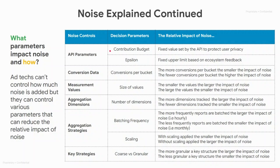The first two parameters are API privacy parameters. The contribution budget is a fixed value set by the API to protect user privacy. As you will see in noise lab, this is a fixed value that can be used to scale values that an ad tech is tracking. Next, we have epsilon, which is another privacy parameter.